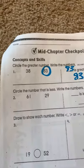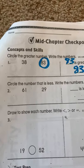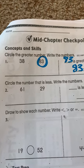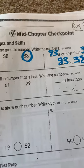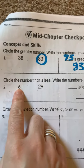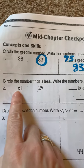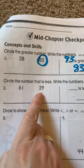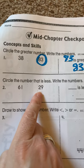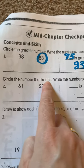Now you're going to do it down here. But instead of doing greater, you're going to circle the number that is less. Write the numbers. So I'm not doing it. You're 61, 29. You have to look at the tens first. See if they're the same or if they're different. If they're different, you look at which one is less.